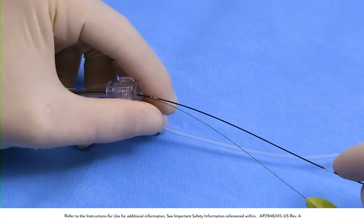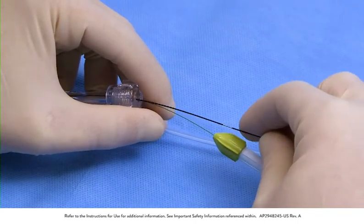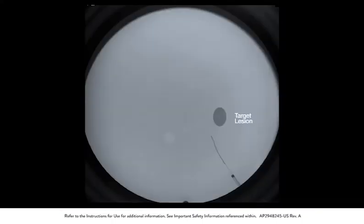Advance the delivery catheter through the guide catheter or introducer sheath to a location proximal to the lesion. Advance the bare wire across the lesion.